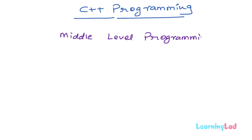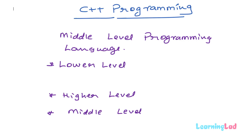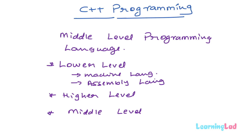C++ is a middle level language. We have divided the programming languages into three categories: lower level languages, higher level languages, and middle level languages. Lower level languages allow us to directly interact with the machine — machine level code and assembly level languages come under this category. Higher level languages allow a programmer to easily write programs in a language almost similar to human readable format, and they offer a lot of built-in features. Middle level languages offer features of both higher level and lower level languages.